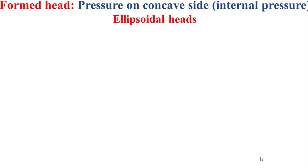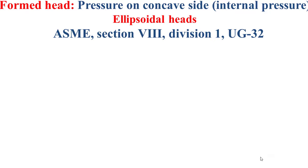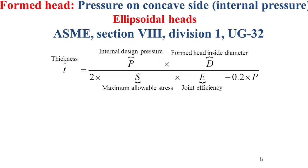Now I will explain how to determine the appropriate thickness of an ellipsoidal formed head subjected to pressure on the concave side, which means internal pressure, based on ASME Section VIII Division 1 UG-32. This formula is used to obtain the appropriate thickness. P is the internal design pressure, D is the inside diameter of the formed head skirt, S is the maximum allowable stress of the material, and E is the joint efficiency. S and E are determined as explained in the previous educational video.